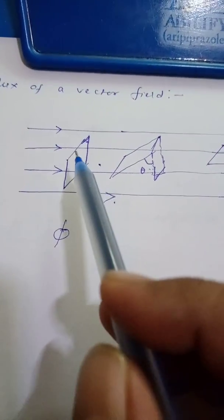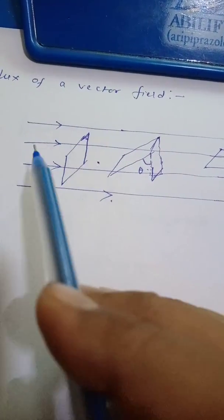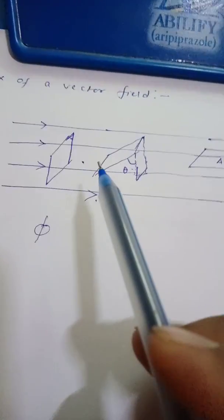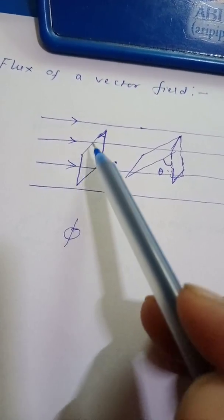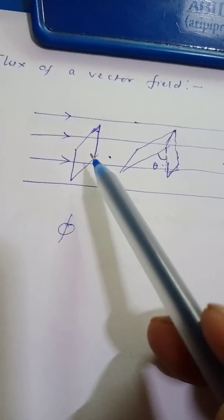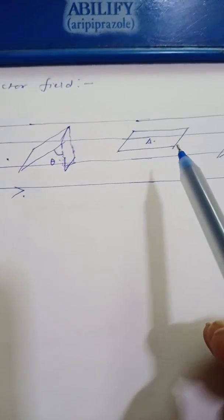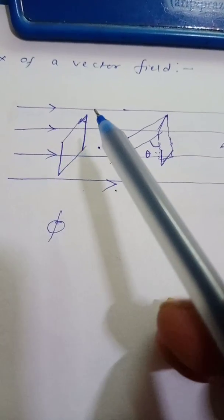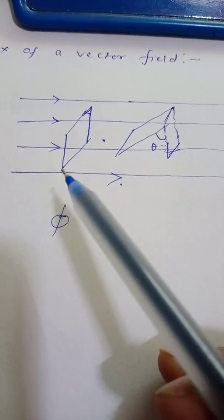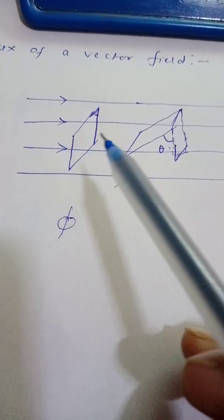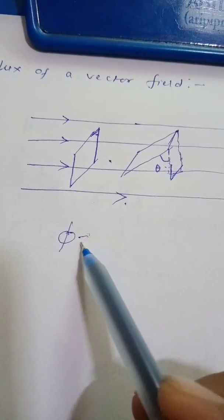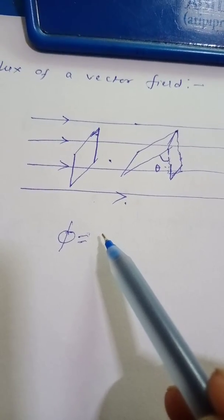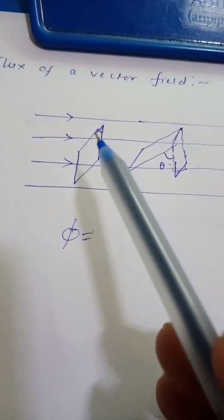Let us consider the example of flux of a velocity vector. Suppose these four lines represent the direction of flow of liquid through a region, and this is the rectangular wire loop. I have shown four different positions of this rectangular wire loop. In the first position, the plane of the loop is at right angles to the direction of flow. The flux of the velocity vector is actually the volume of liquid which is flowing through this loop in one second.